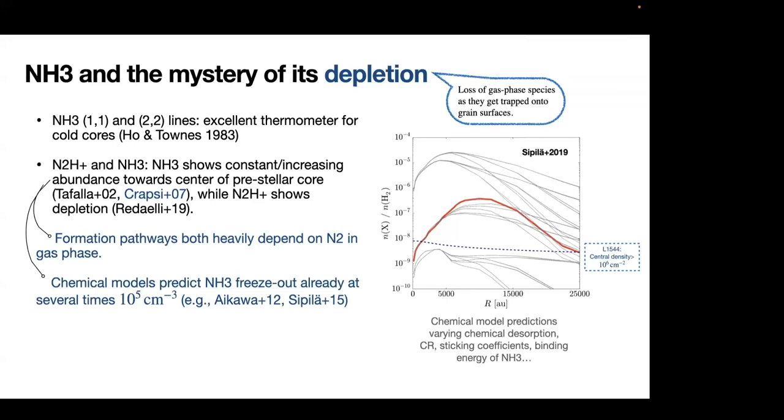The spectroscopic properties of its inversion lines makes it an excellent thermometer for the molecular clouds. Especially these lower inversion transitions can probe the relatively low temperature associated with the pre-stellar cores. In terms of its chemical properties, what makes it interesting is because we have this puzzling observational fact of ammonia that it does not show as the other carbon-bearing molecules or even nitrogen-bearing molecules that it does not show this molecular depletion in the very center of pre-stellar cores.